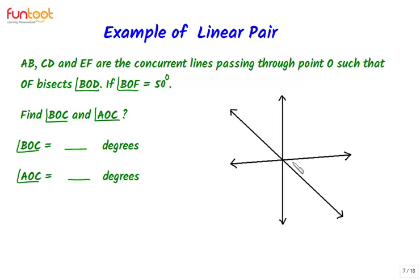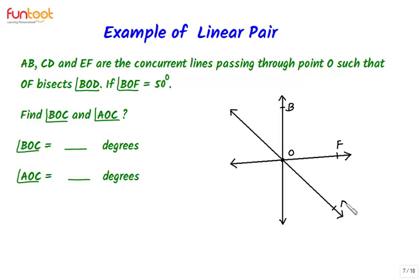Let us first draw three concurrent lines as given in the question. A, B, C, D, E, F are the concurrent lines passing through point O. It is given in the question that OF bisects angle BOD. So if I name this point as F, this as B, and this as D, then OF bisects angle BOD means that this angle here is equal to this angle.